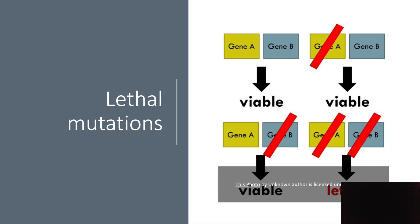What are lethal mutations? Lethal mutations are a kind of mutation where the mutated cell or offspring will not be viable — they cannot survive. For example, consider a person A who has a mutation in their germ cell.